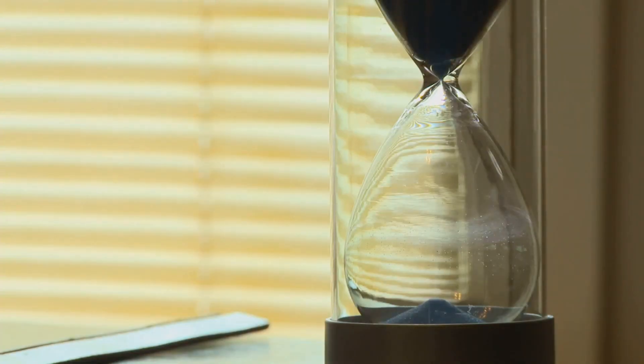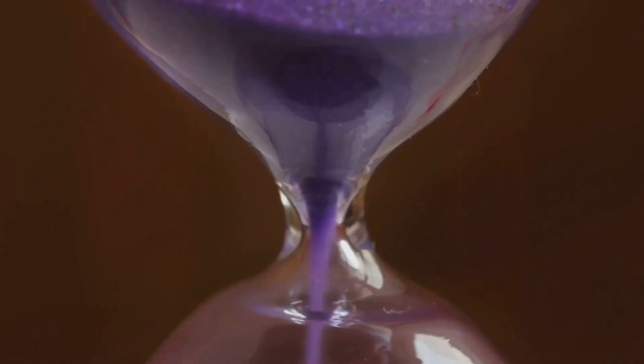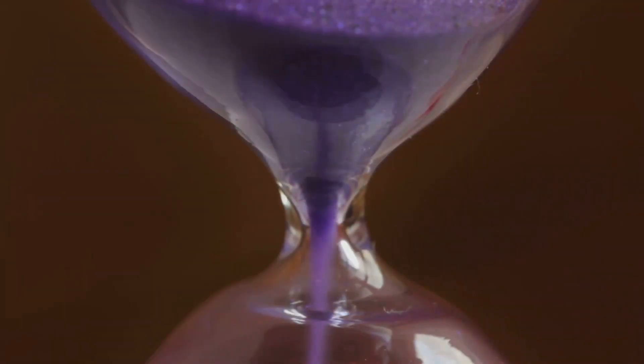Over the centuries, our timekeeping methods have evolved from the hourglass to the mechanical clock, and now to the digital watches and smartphones we rely on today. So the next time you check your wristwatch or phone for time, remember the centuries of innovation that led to that simple act.